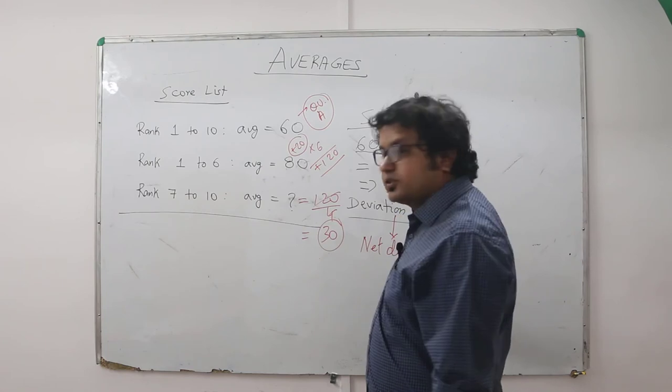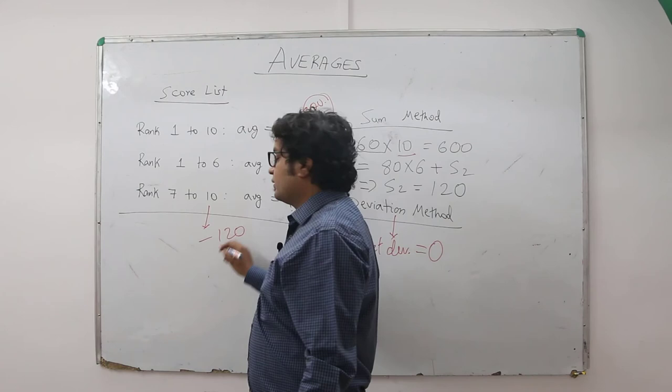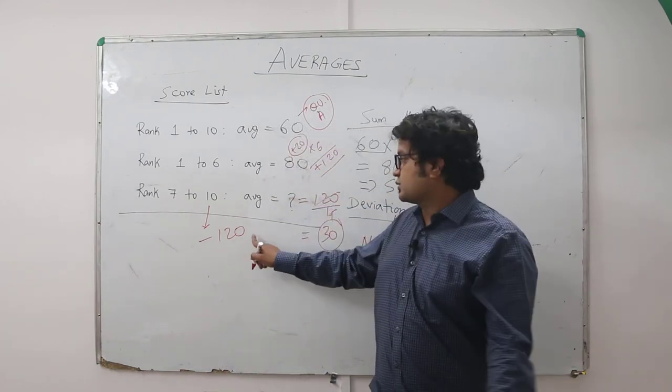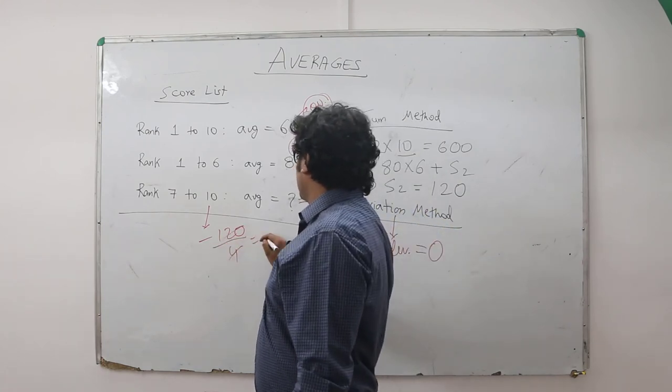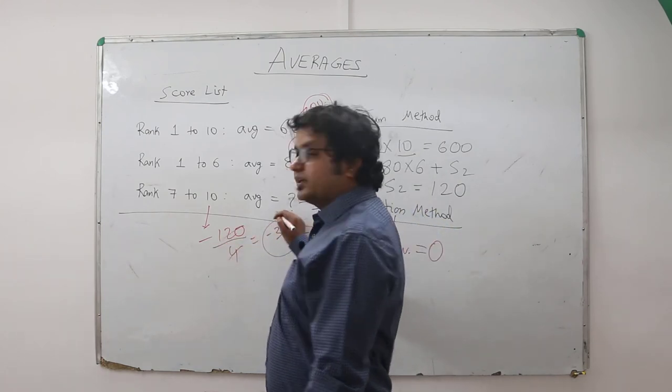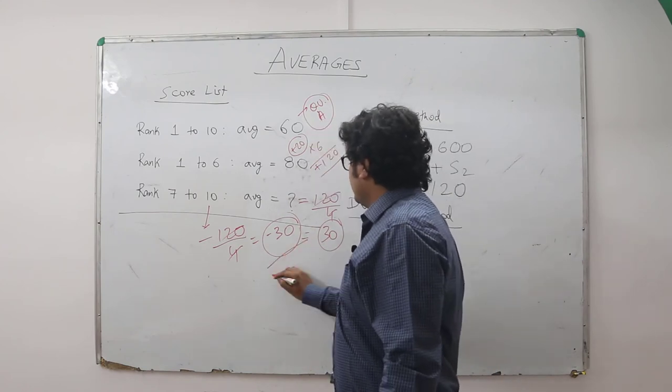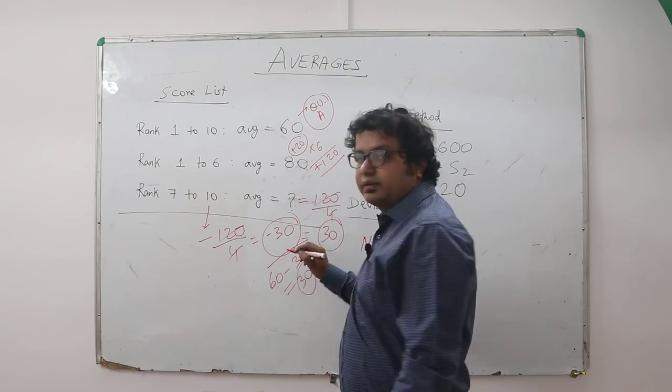Overall deviation should be 0. So the net negative deviation for the remaining lot will be minus 120. That is the logic. Minus 120. And how many people are there? 4. So this becomes minus 30. So the deviation here is minus 30. Overall average was 60. So the average becomes 60 minus 30, that is equal to 30.